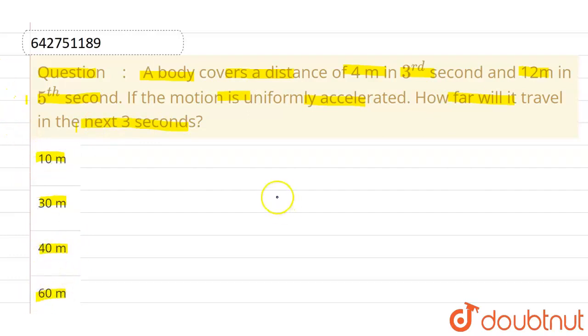Now we know a formula that distance traveled in nth second is given by u plus a by 2 into 2n minus 1. This is the formula for displacement in nth second.